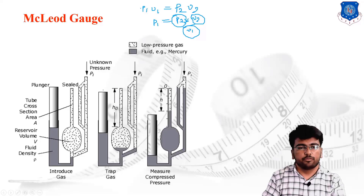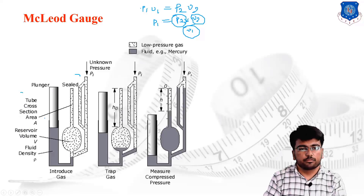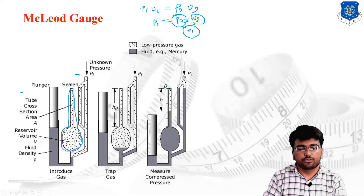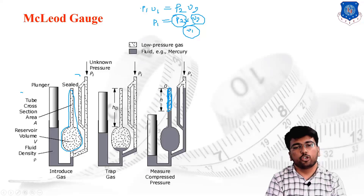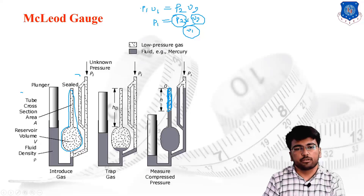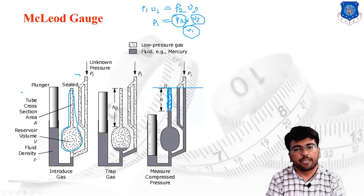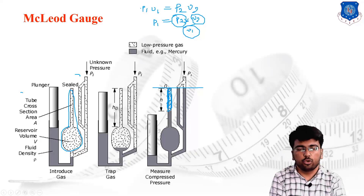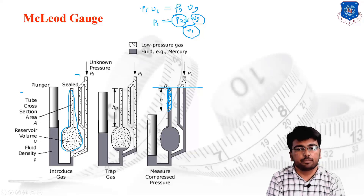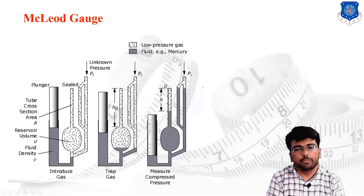From figure one we can identify the initial volume, and from figure two we can identify the final volume. From these initial and final volumes we can determine the volume values. To measure the pressure, we draw a datum line, and from the datum line the pressure is calculated as P = ρgh. Using this concept, we can measure the unknown pressure P1 available in the mainstream pipeline. This is the McLeod pressure gauge.